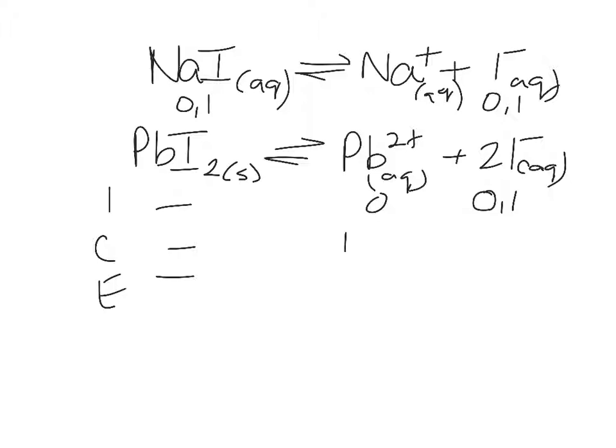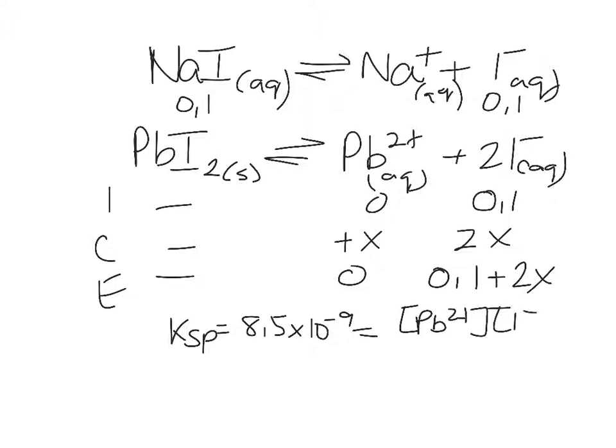So change is still plus X plus 2X. 0.1 plus 2X. Your Ksp doesn't change. So you've got X times 0.1 plus 2X all squared. Are you okay? You follow me so far? 0.1 from sodium iodide. It's in the solution so it just comes part of the initial for just iodide because there's no lead.